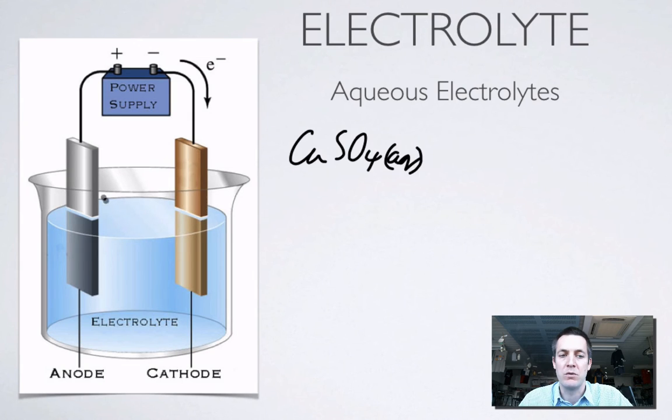Now if we consider what ions are going to go to the positive electrode, well we've got sulphate ions clearly but we've also got hydroxide ions from the water. And as far as what goes to the negative electrode and gains electrons, gets reduced, well it could be copper ions but it could also be H plus ions.